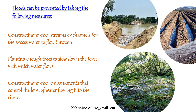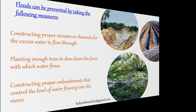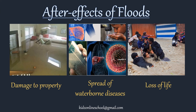Floods can be prevented by taking the following measures: constructing proper streams or channels for the excess water to flow through, planting enough trees to slow down the force with which water flows, and constructing proper embankments that control the level of water flowing into the rivers. After effects of floods include damage to property, spread of waterborne diseases, and loss of life.